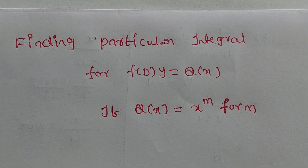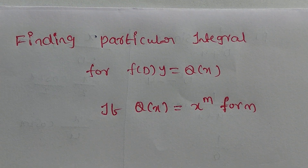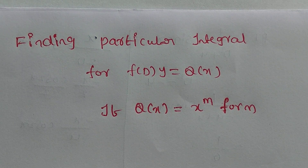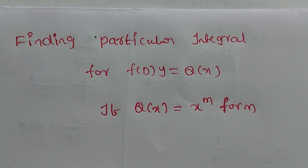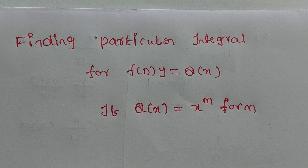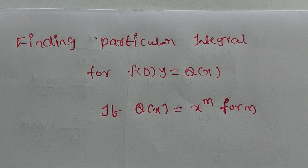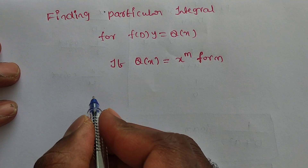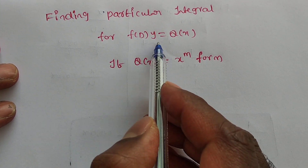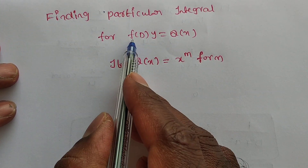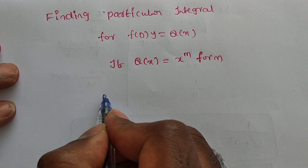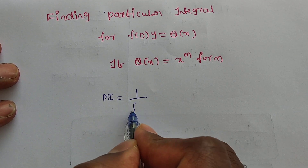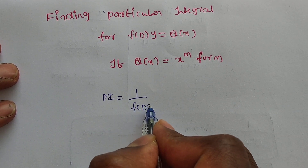In this video we are discussing finding the particular integral for f(D)·y = Q(x), where Q(x) is of the form x to the power n, or a polynomial in terms of x alone. For finding the particular integral, we write PI = 1/f(D) · Q(x).